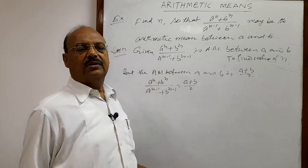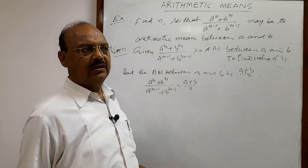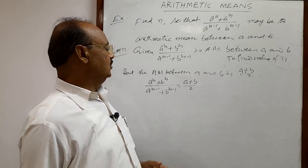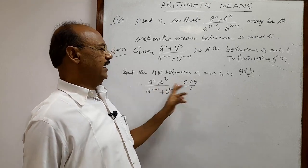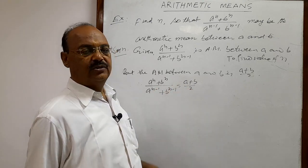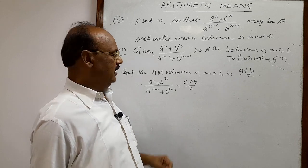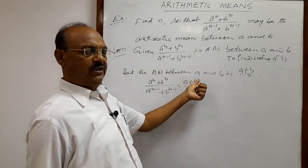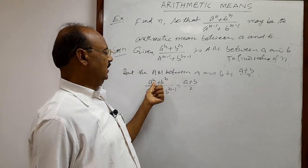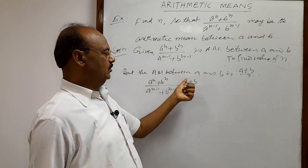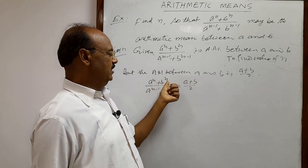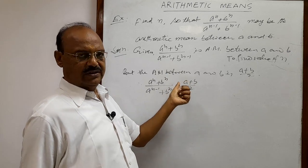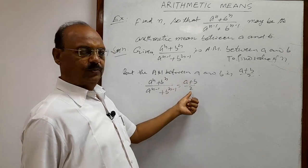If you use the shortcut method in objective examinations you can do that. By comparing both sides we can get n is equal to 1. Here you see the power of a is 1 and the power of b is 1, so the power of a and b are both n. So n is equal to 1 obviously.